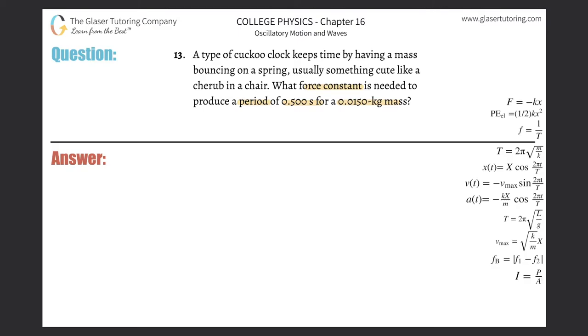...we can use this formula here that relates the period to the mass and the force constant of the spring. The period of oscillation is just simply the time of one oscillation—that's all it is.